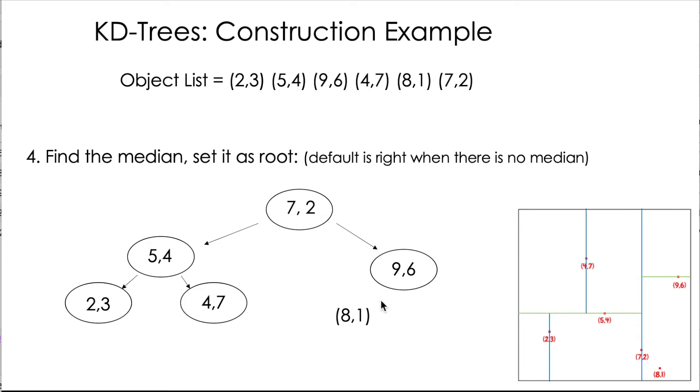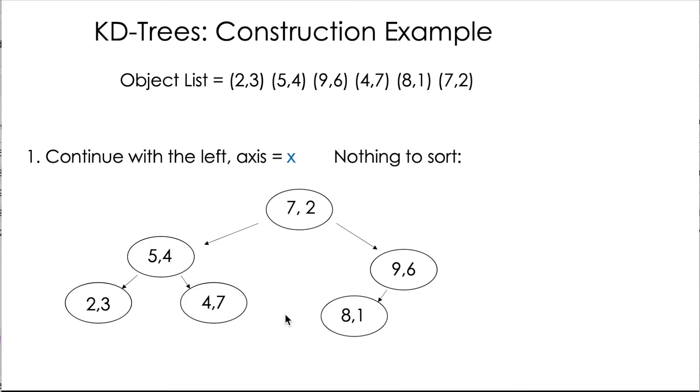And the only remaining data point is 8,1, which is a new node with the axis equal to x. So it means we're creating a new vertical cut in the number 8 right here. So that's it. This is the way we build automatically our KD tree.